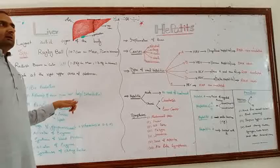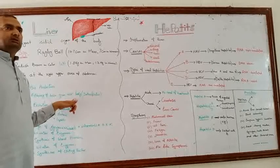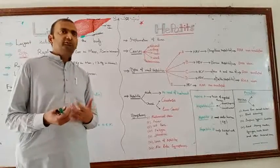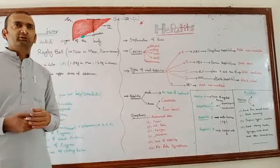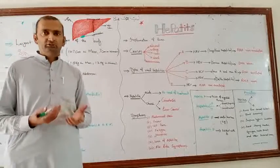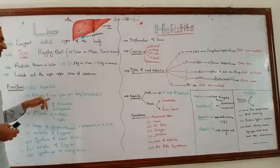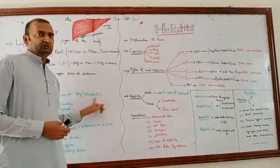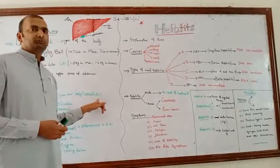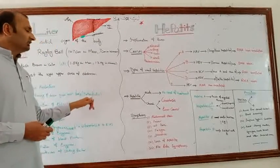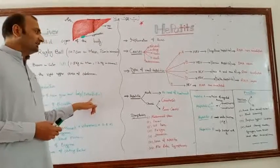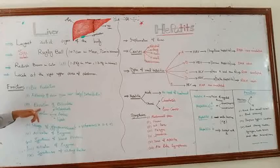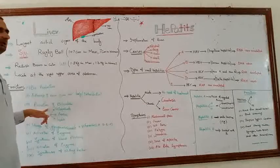Number two is the filtering of toxins from your body. It filters many toxins that come from our food, water, and other sources. This process is called detoxification — it detoxifies the harmful effects of toxins. This is very important for us.